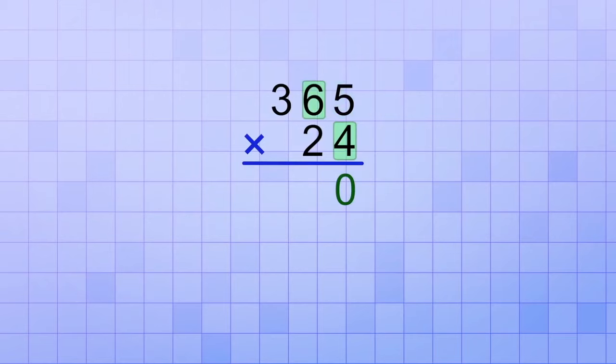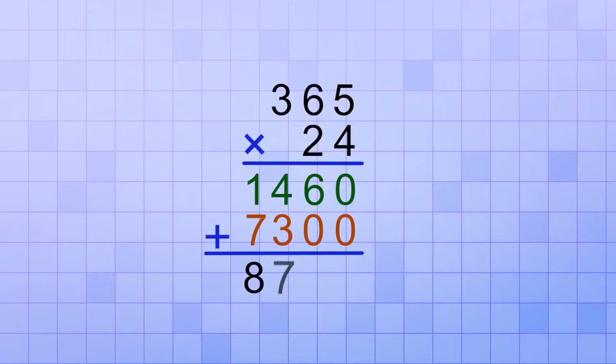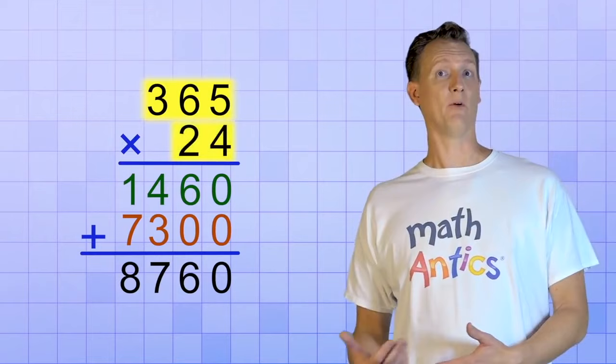You would just follow the procedure that we learned in Multi-Digit Multiplication, Part 2, and you'd get the answer... 8,760. But that's the answer to 365 times 24, not 3.65 times 2.4. So it's time to stop pretending.